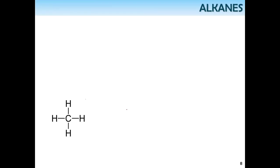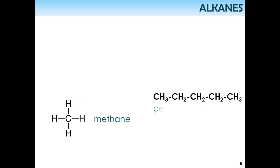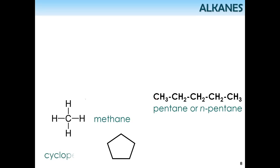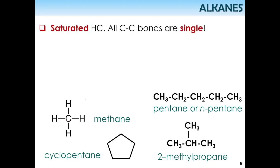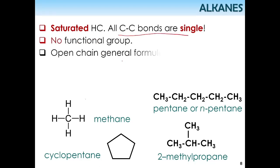So let's see this one. The example shown is methane, where all carbons have single bonds. You can also write it in condensed form. Here we have 5 carbon atoms — pentane; a cyclic compound — cyclopentane; and a branched alkane which is 2-methylpropane. So all these are saturated carbon with single bonds, no functional group. The open chain ones follow the general formula CnH2n+2.